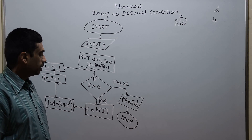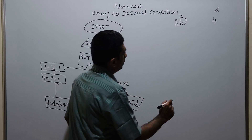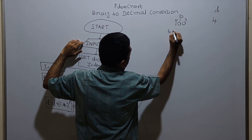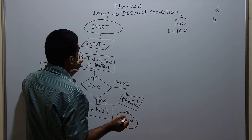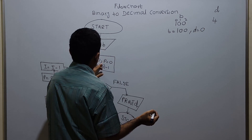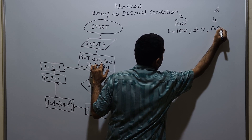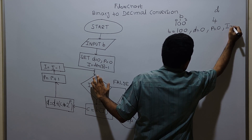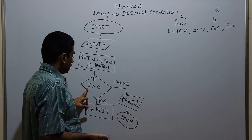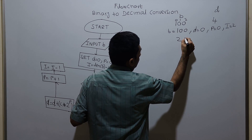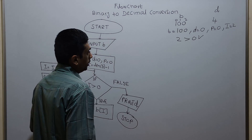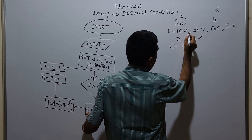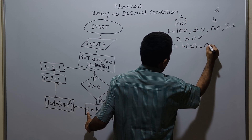Now we will take a sample input and check how this flowchart works. My input is 1 0 0, a binary value. Logical start, input B — B equals 1 0 0. Set D equal to 0, P equal to 0, and I equal to length of B minus 1. Length of B is 3, so 3 minus 1 equals 2; my value of I is 2. Check: 2 greater than 0 — condition is true. C equal to B of I, that is B of 2. What is at the second index position of array B? The value is 0, so C equals 0.